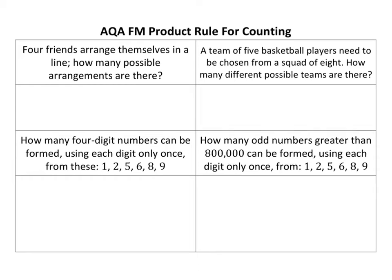We're looking at the product rule for counting. This is basically a quick method of coming up with how many different arrangements you can have.